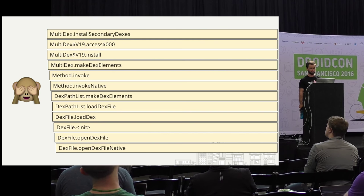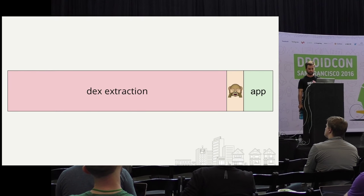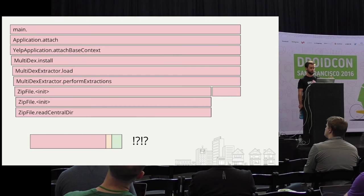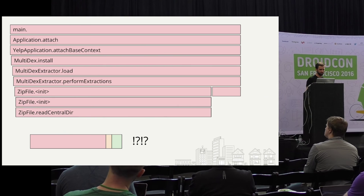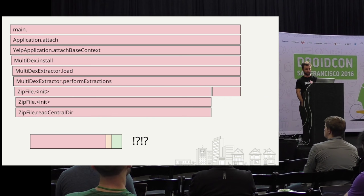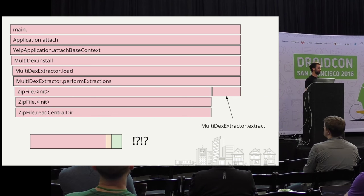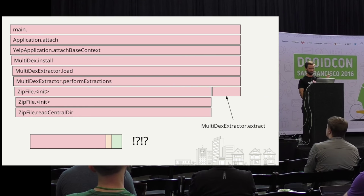Let's dive into the elephant in the room: what the heck is going on with dex extraction? Why is it so slow? Here's a zoomed-out view. I've annotated the methods, and at the bottom is a reminder of the proportions. We see things like zip file init, zip file read central directory — I don't know what that is. Why is it taking so much time? And actually, this tiny portion on the right here is the MultiDexExtractor extract method — that's the part that actually extracts. So what is going on for the entirety of the rest of the time?